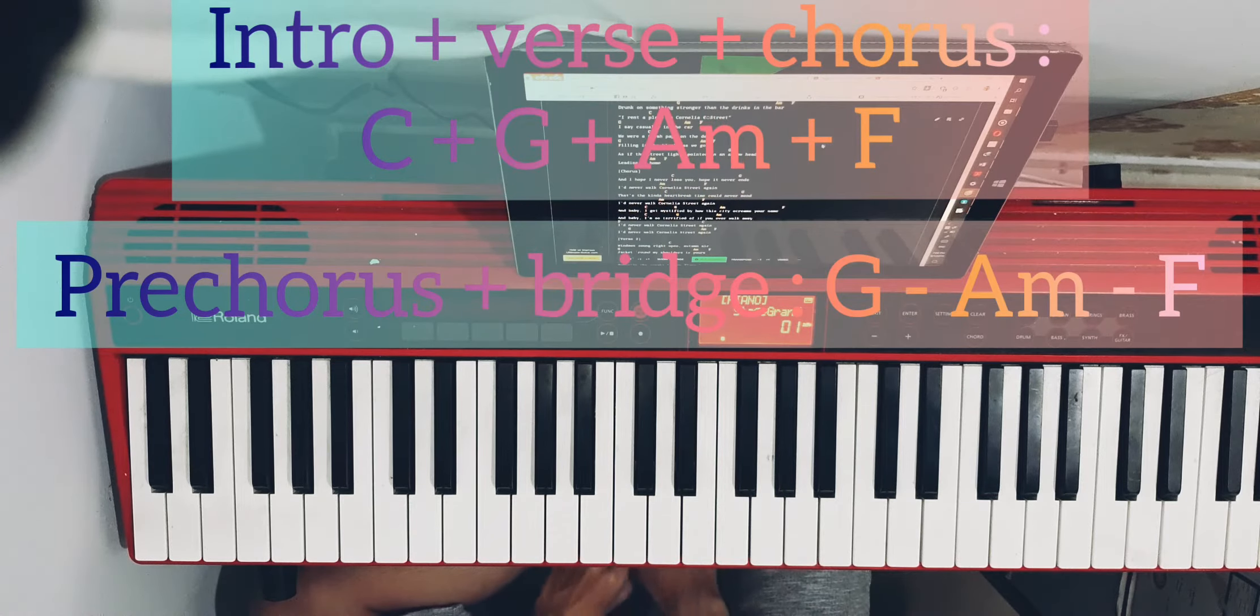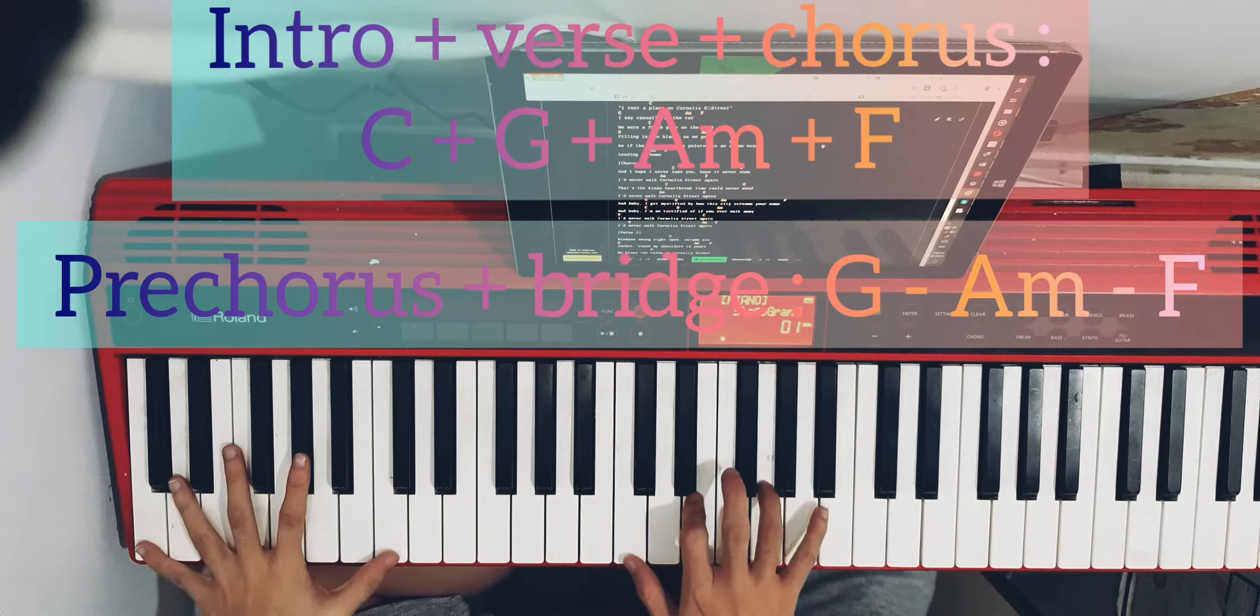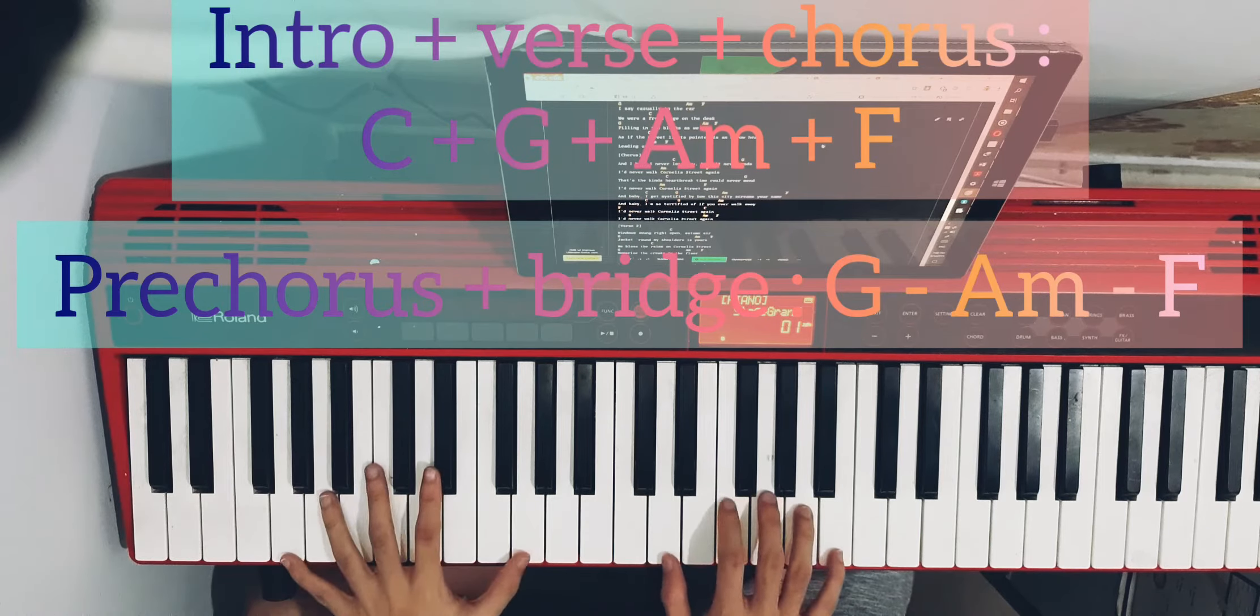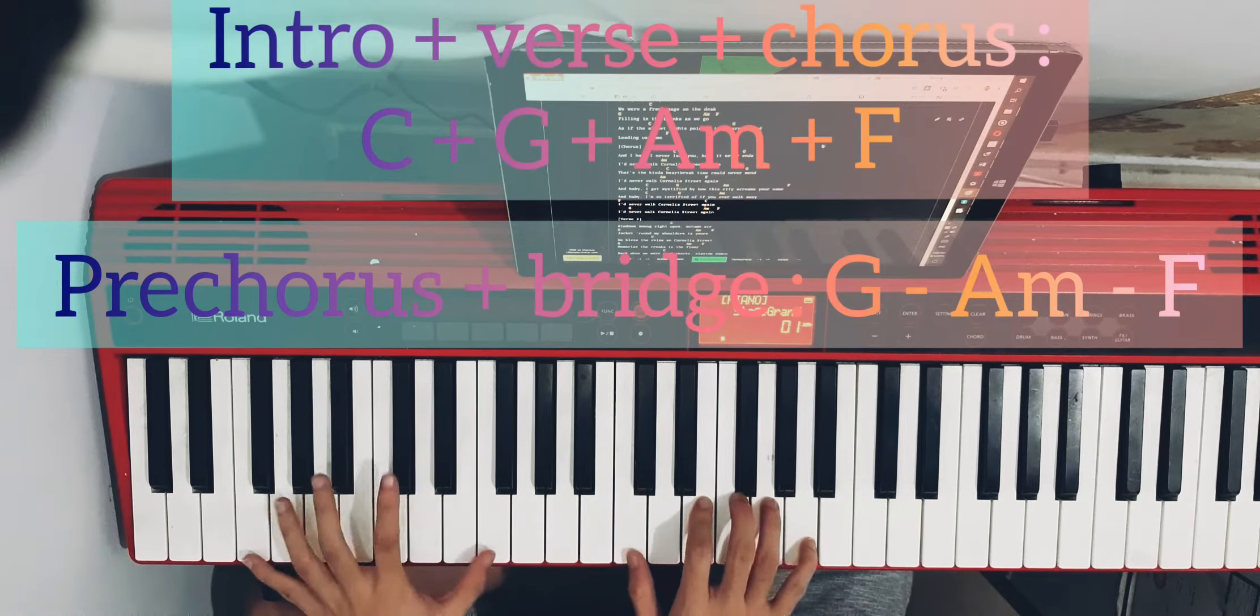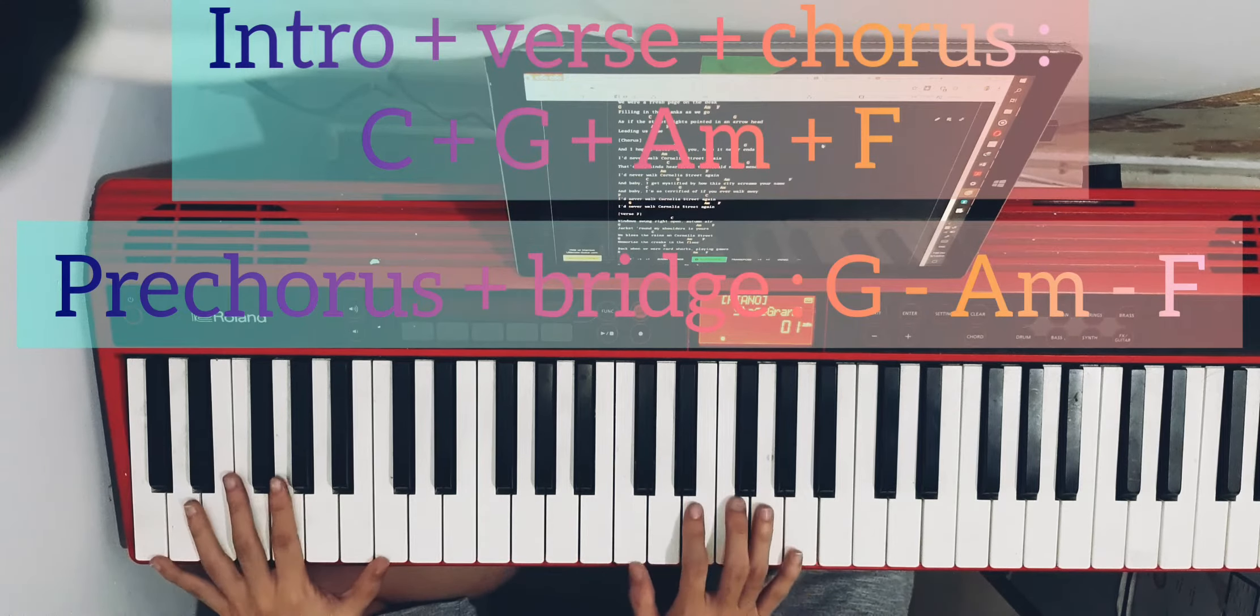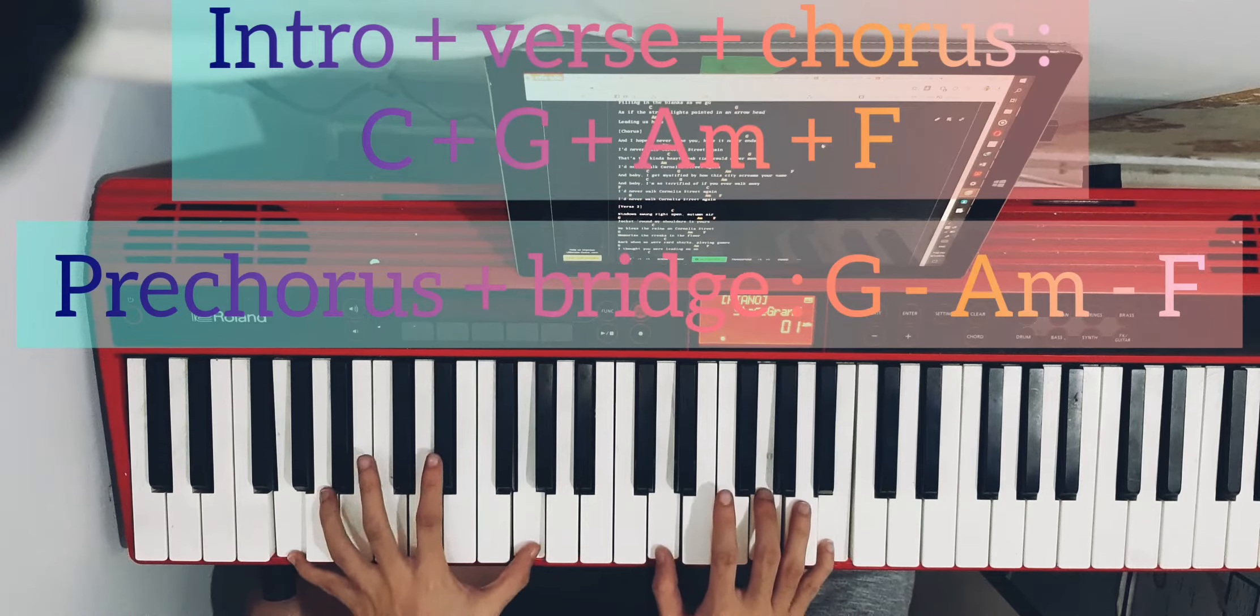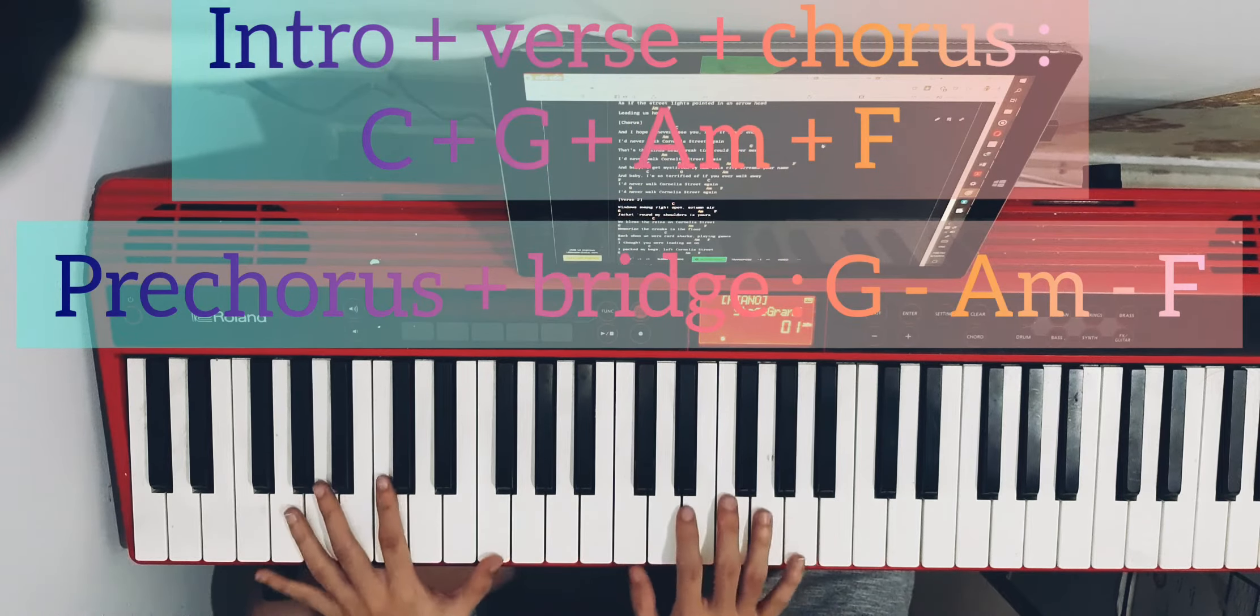And now to the chord. The second half of the chorus still plays chord one. So, I hope I never lose you, hope it never ends, I never walk Cornelia Street again. Same chord progression. That's the kind of heartbreak time could never mend. I never walk Cornelia Street again.